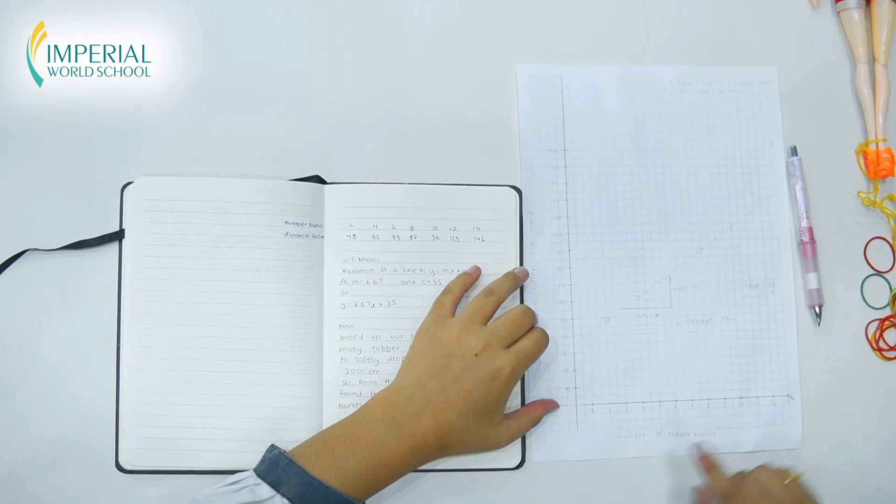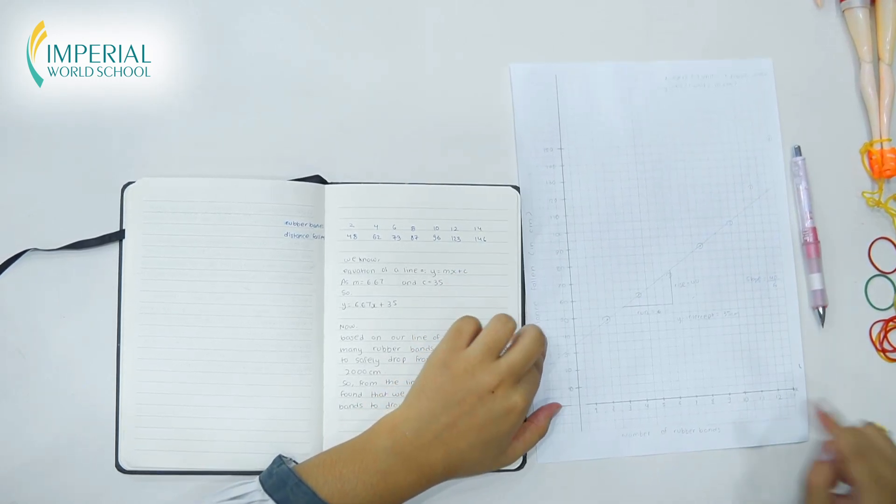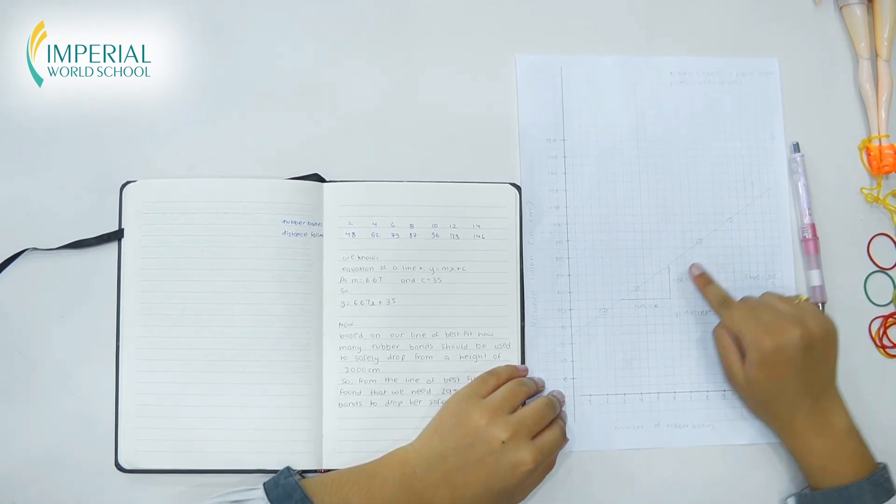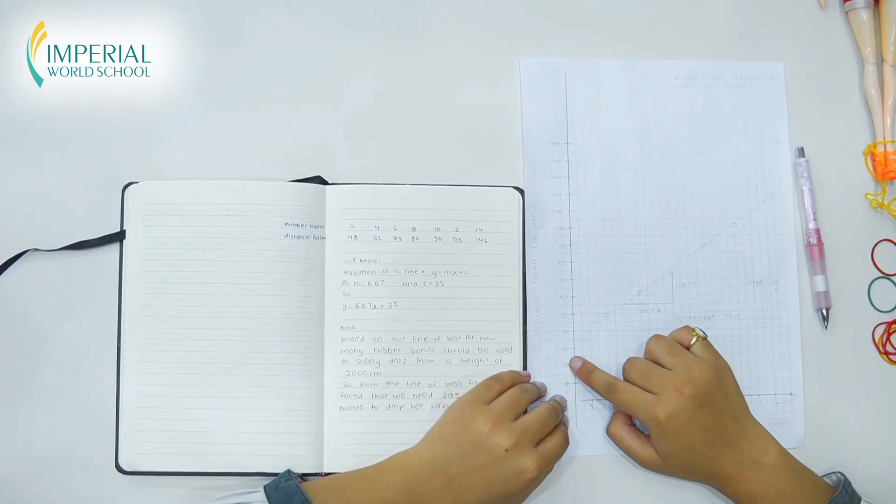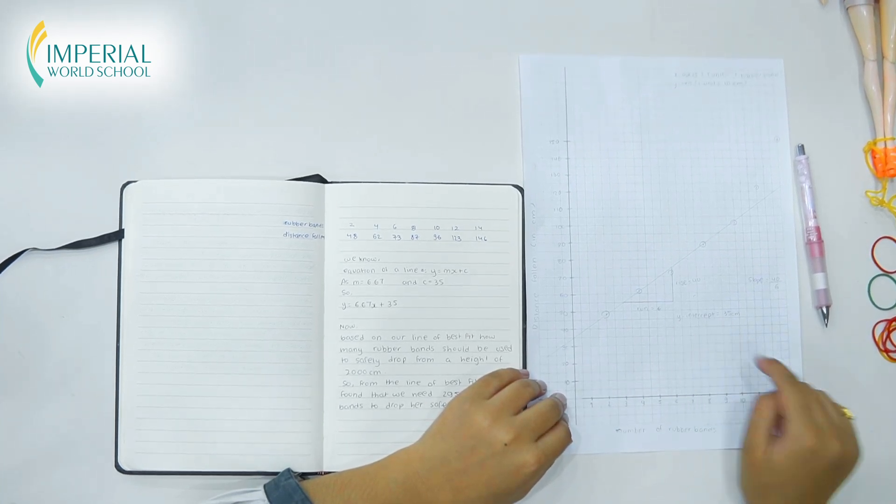Here in the graph, number of rubber bands is represented by X axis and the distance fallen is represented by Y axis. I've plotted the points here already and pulled the line, the line of best fit and it has intercepted Y by 35 centimeter.